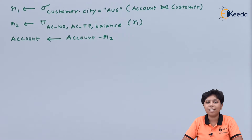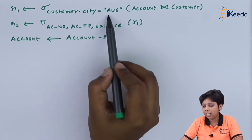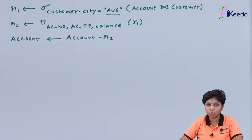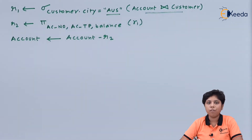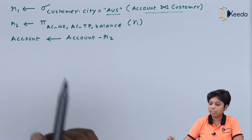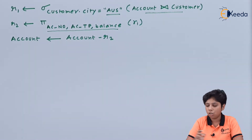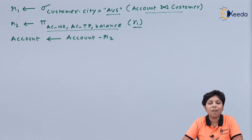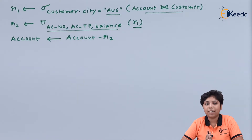In the final example of deletion, we first assign a temporary value r1 with the result where the customer is residing in the city of Australia. We join the account and customer relations, so now we have all the attributes of accounts for customers residing in Australia. We then fetch the account number, type, and balance — which are exactly the attributes of the account relation — from r1. Now we have all the information on the customer, their account number, type, and balance, merged with the customer relation for those residing in Australia.